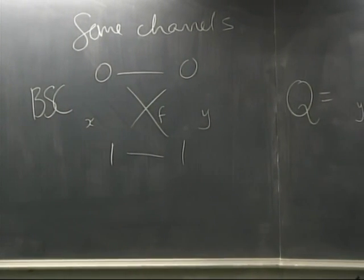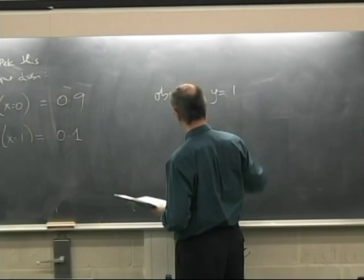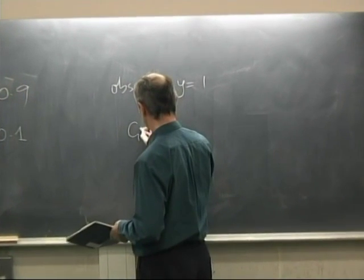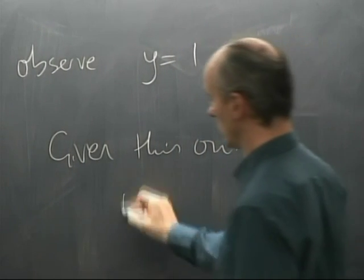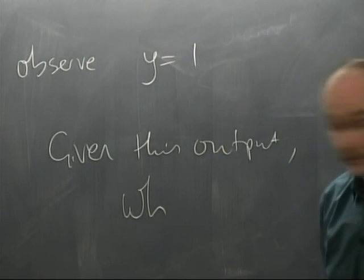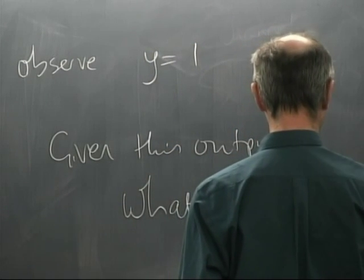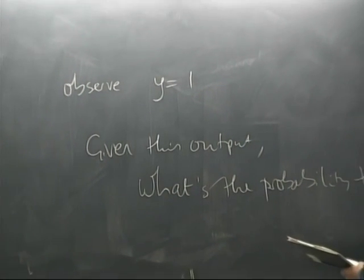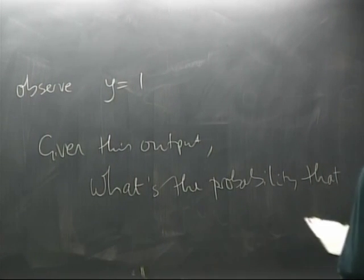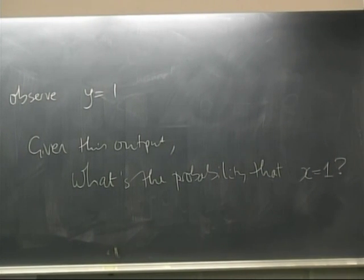Now suppose we look at a particular moment and observe what the output of the channel is. Given that the output Y equals one, what do we think the input was? What is the probability that X was one, and what is the probability that it was zero? Please work this out and chat to your neighbor.